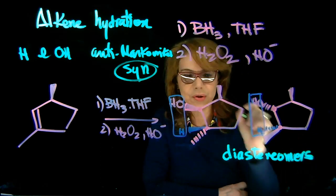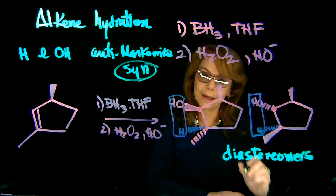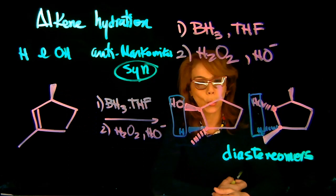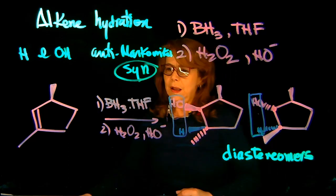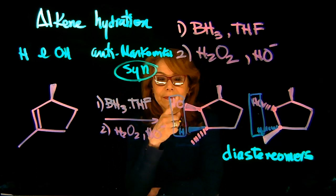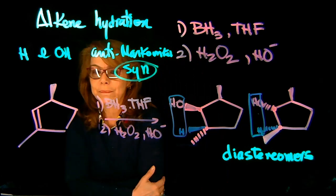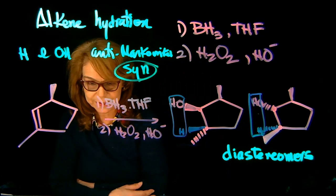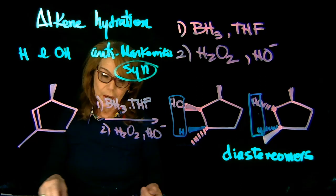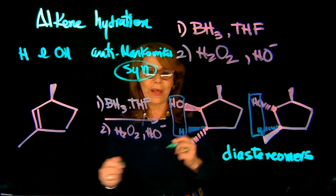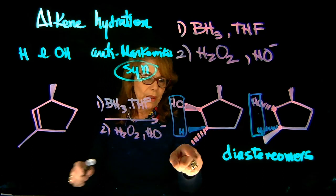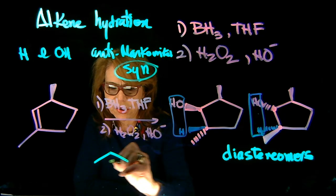They're not enantiomers because we had a chiral center at the beginning in the original molecule and that wasn't inverted. So, recap: this is the condition to do anti-Markovnikov hydration, which means the H at the more substituted, the OH at the least substituted, and we will do that also in a syn fashion.